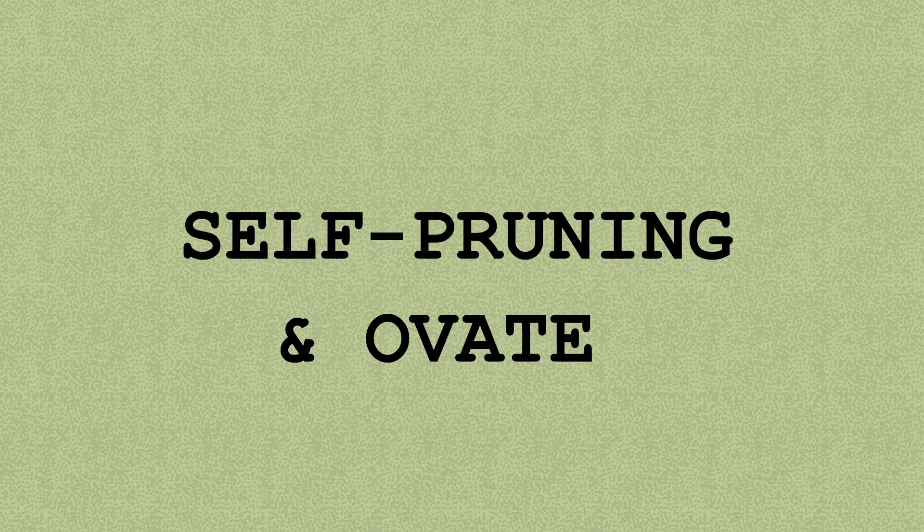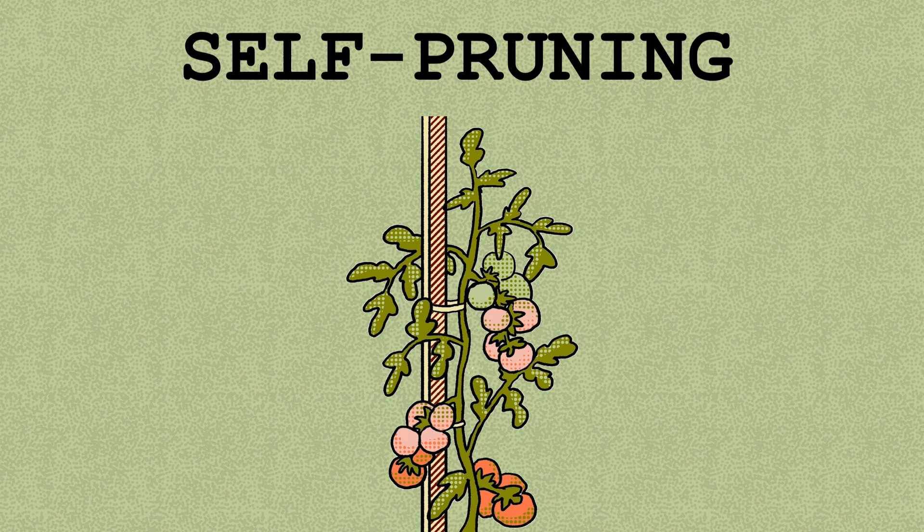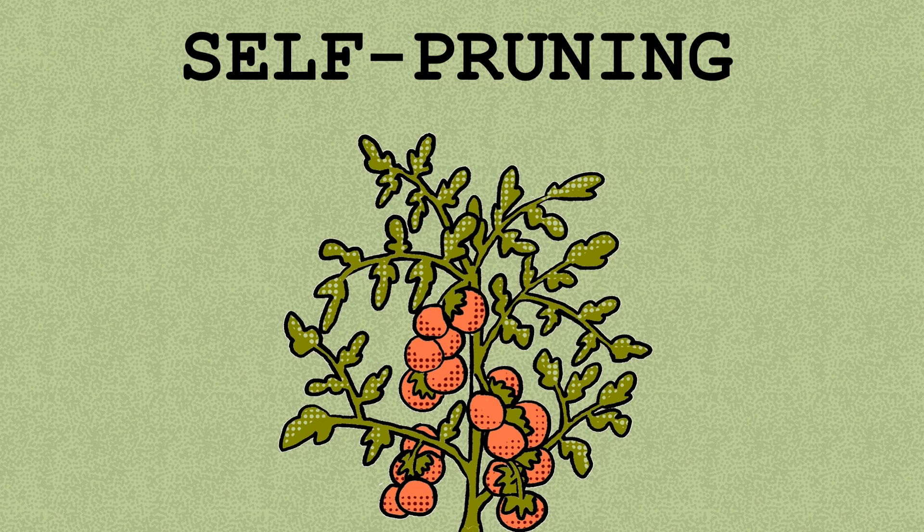Next, they edited the genes self-pruning and ovate. Self-pruning is expressed in the tip of the growing plant, telling it when to sprout leaves and flowers. Breaking it converted a vine that grew continuously into a bush whose fruit happened all at once. This is essential for mechanical harvest.